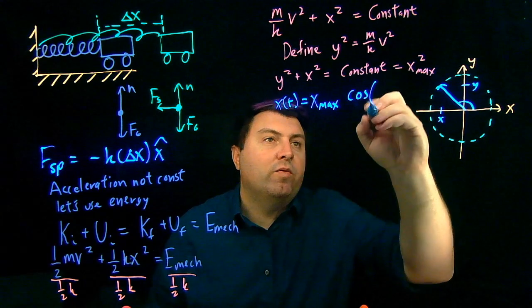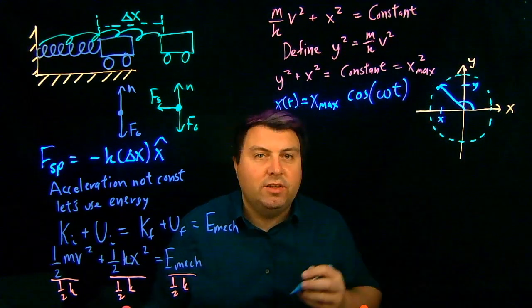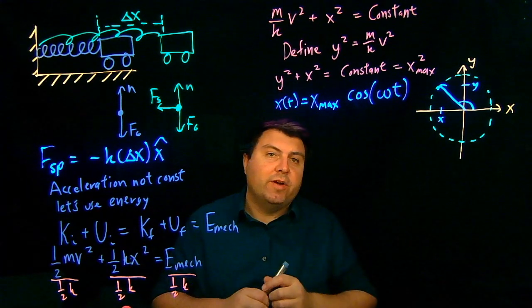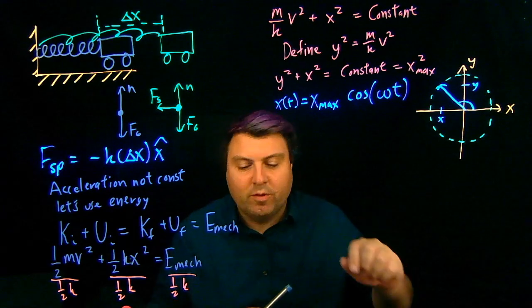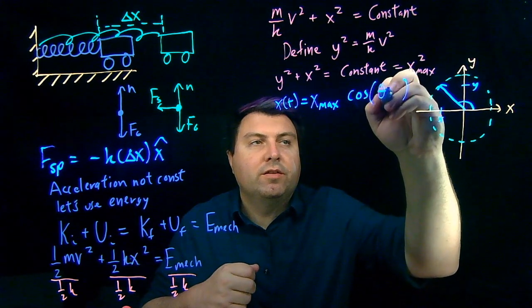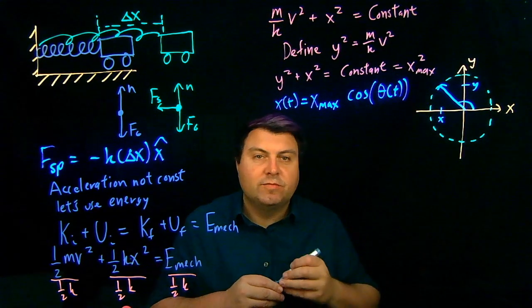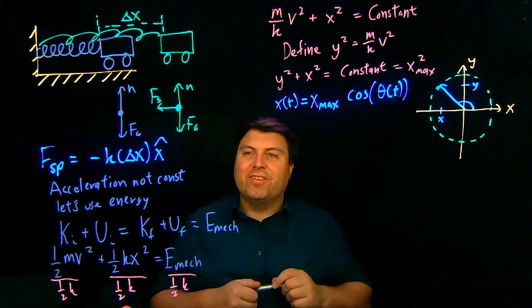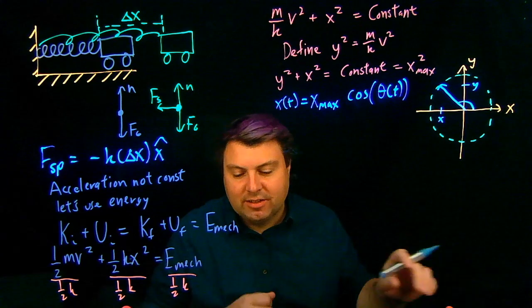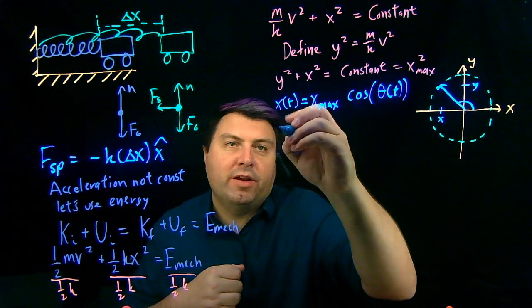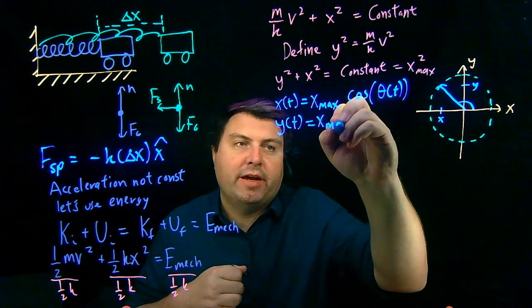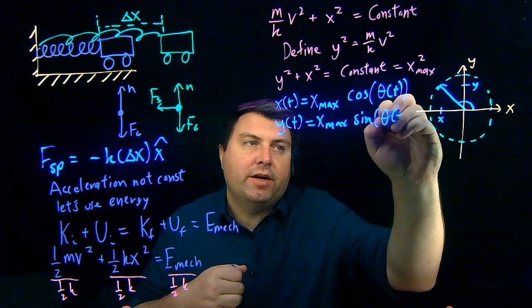And my cosine is going to be something involving t, and we are going to call this something omega t. So, my x max cosine of theta of t. Or theta of t, just call it that instead. So, we don't know the function, or we shouldn't. And so now if we look at this now, we can say, hey, I also know, so then y of t is going to be x max sine of theta of t.